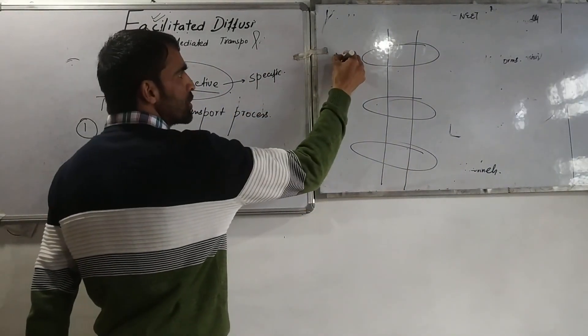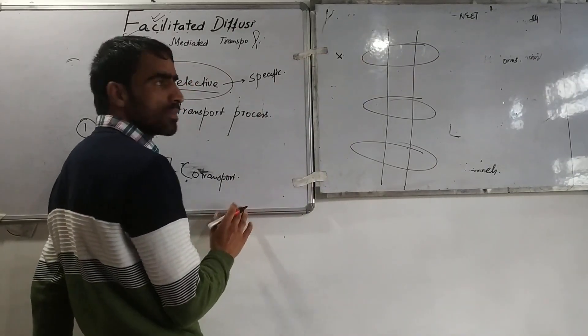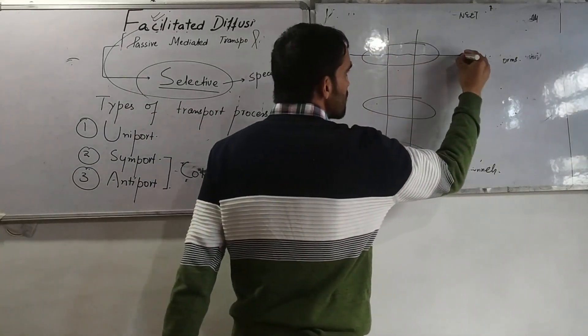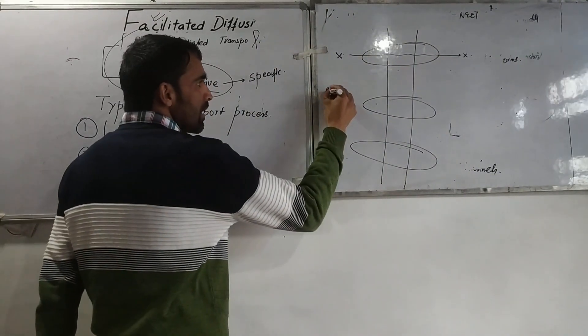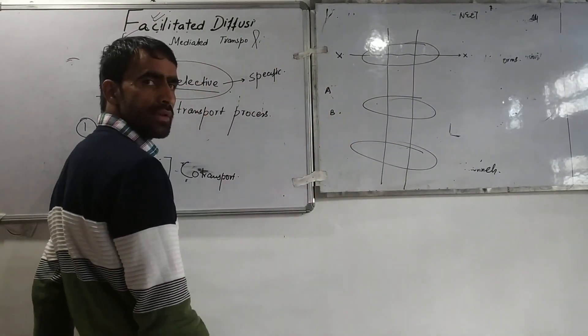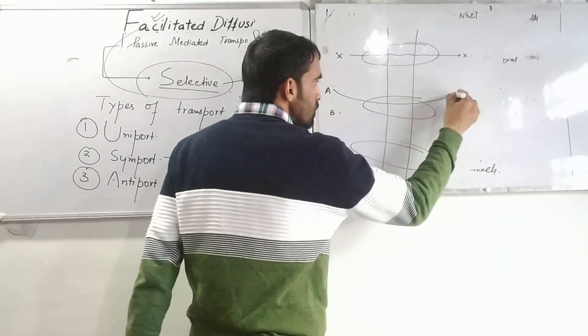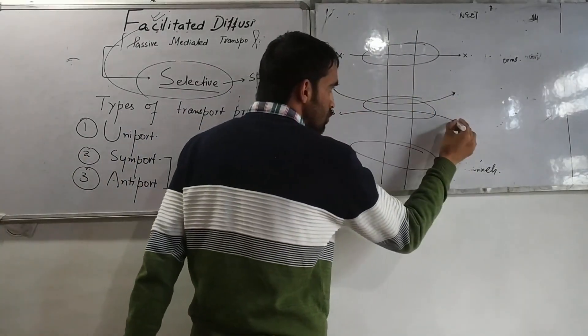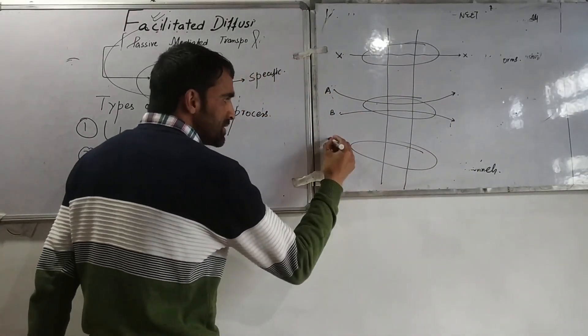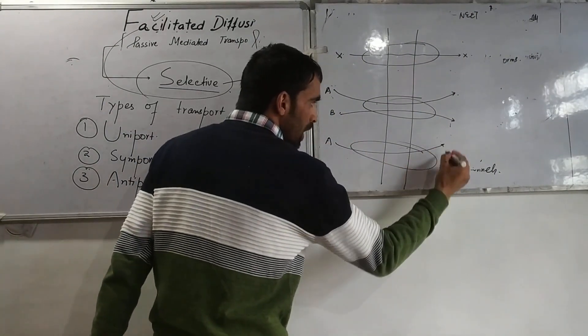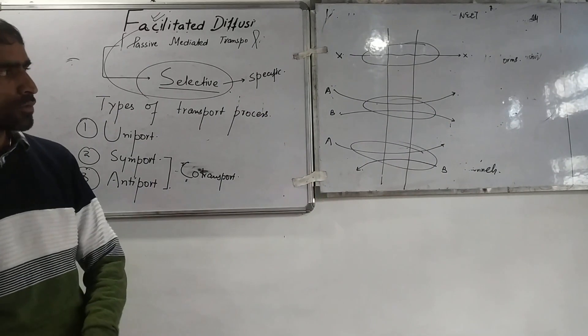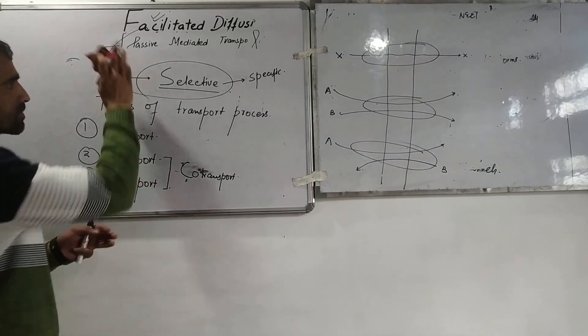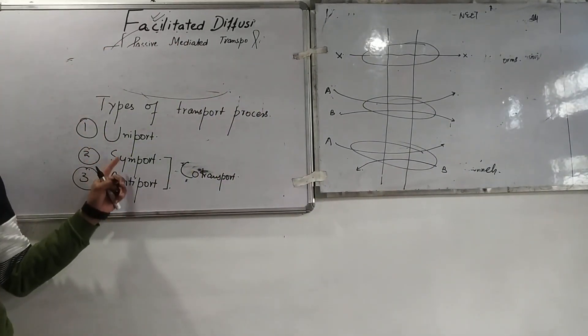This is single molecule X. This is A, this is B. This is A, this is B. Different types of transport: uniport, simport and antiport.